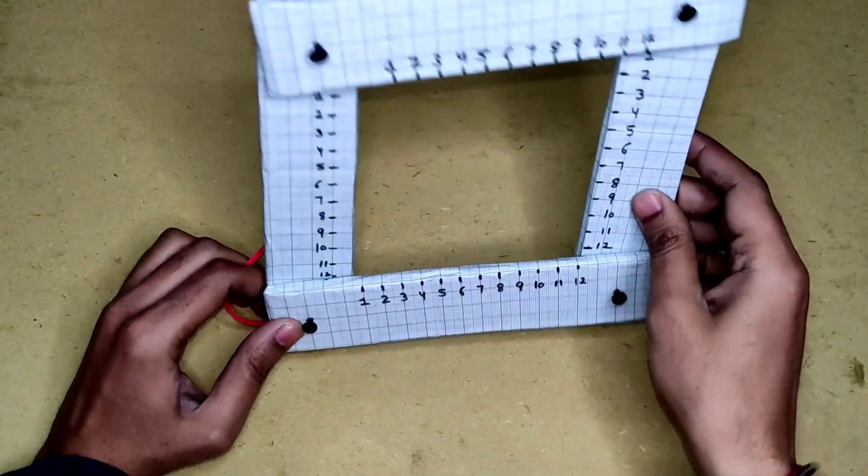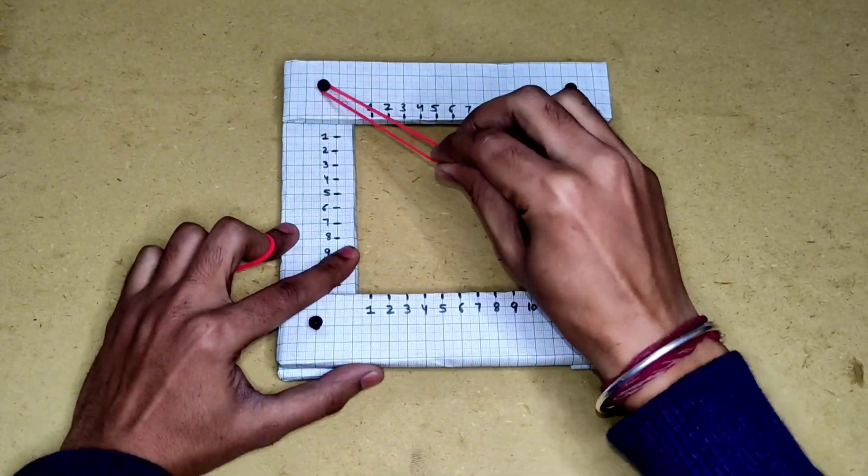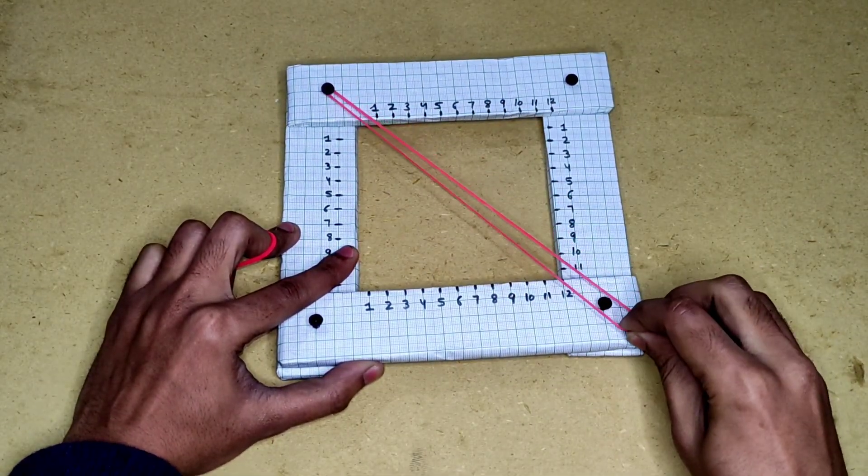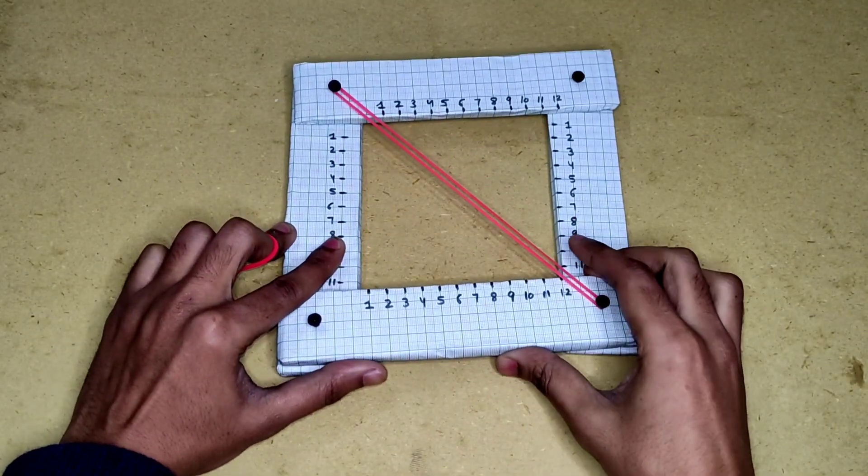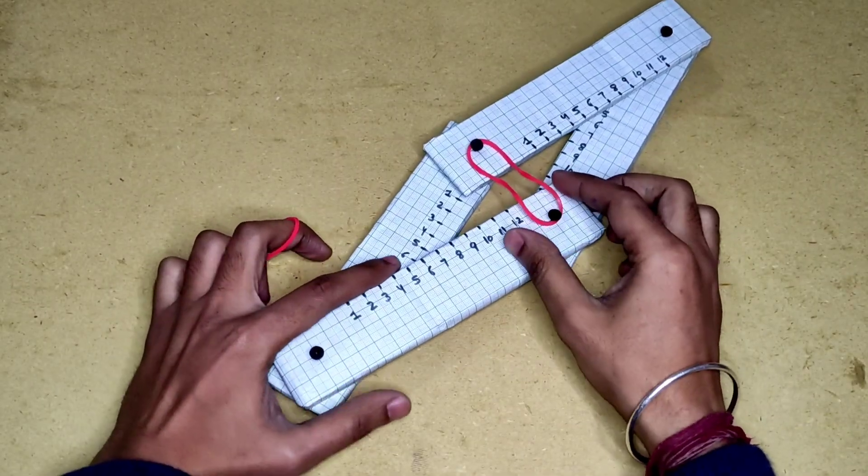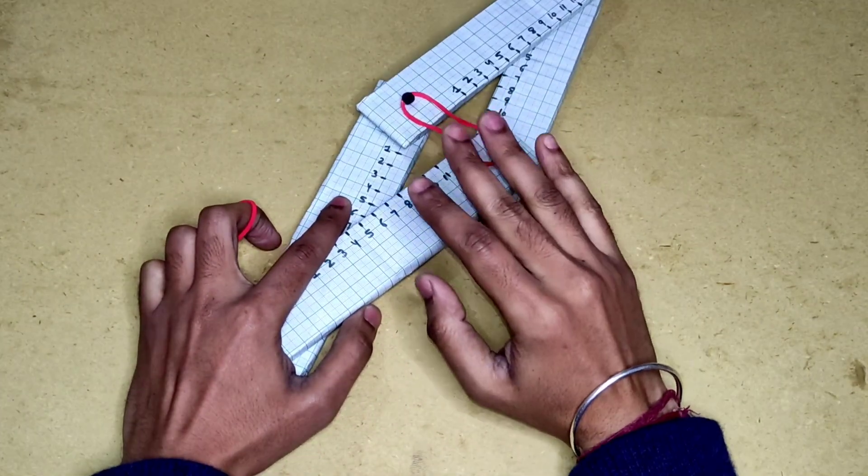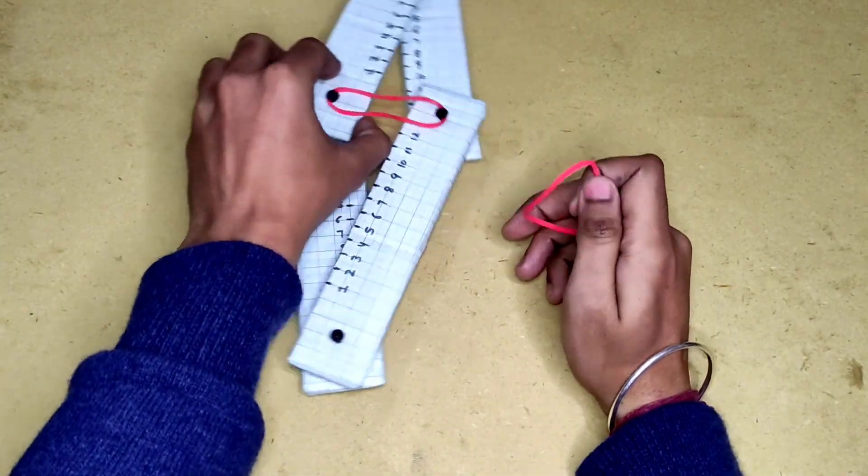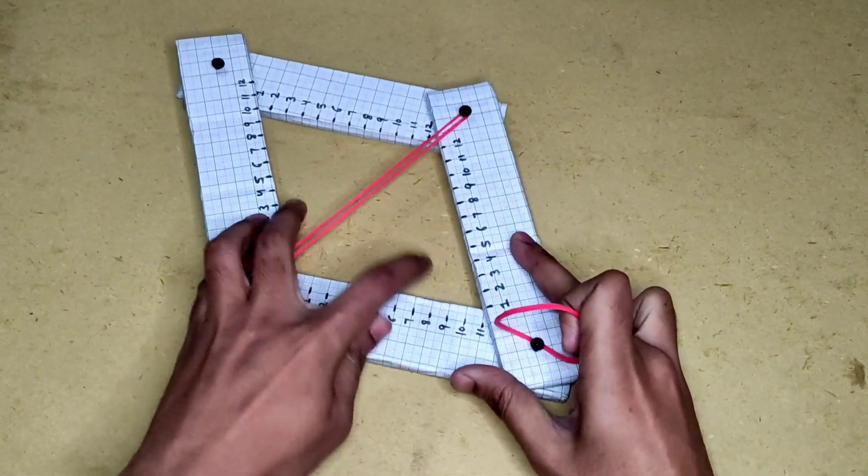If I place two rubber bands such that it forms a diagonal from one point of the square to another point of the square, or we can say that the opposite vertices are joined by a rubber band. So here you can see, if I put a rubber band to the opposite vertices of this square, it did not fix. So I have to place another rubber band to the opposite vertices of this square to make it perfect.